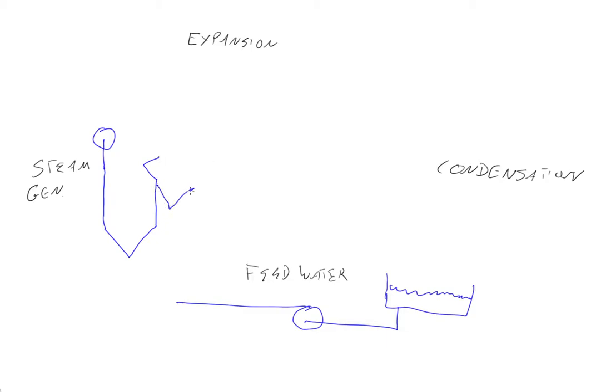The boiler is where steam generation happens. So the feed water goes in and establishes level. In the feed water portion, we are increasing the pressure.